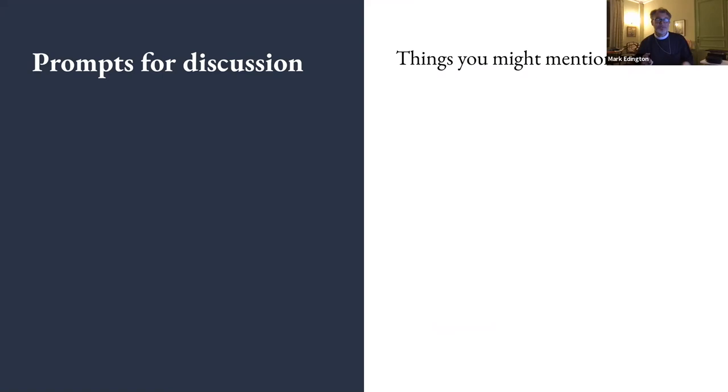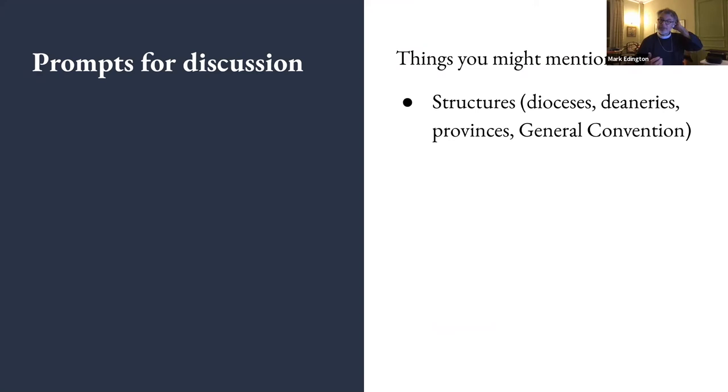But just to give you a sense of some prompts here, here are some things that you might mention as you talk about things you'd want to hold on to or things you'd be willing to let go of. You might mention structures like dioceses or deaneries, provinces, or general convention. Didi and I work together, Bishop Didi and I work together on province two. And sometimes we spend our time in meetings of province two talking about why do we have provinces? That's an interesting question. And it's an important question because people ought not to have, we ought not to have structures in the church that exist for the purpose of being structured. There's no New Testament authority for simply complexifying the life of the church. So think about what are the structures that we have that work, that help us to respond to God's call and mission? And what are the ones that get in the way?